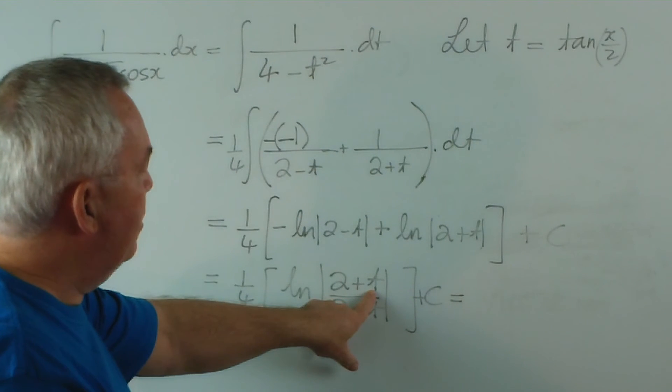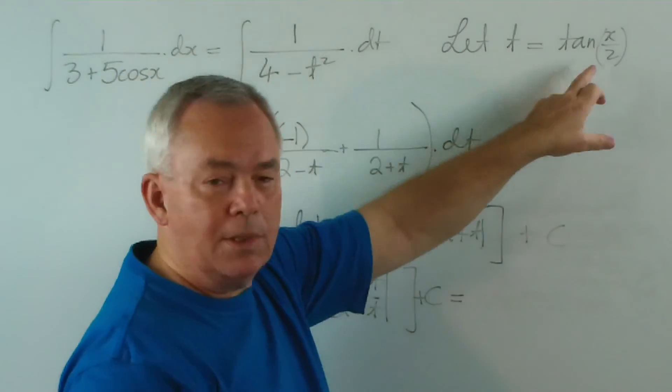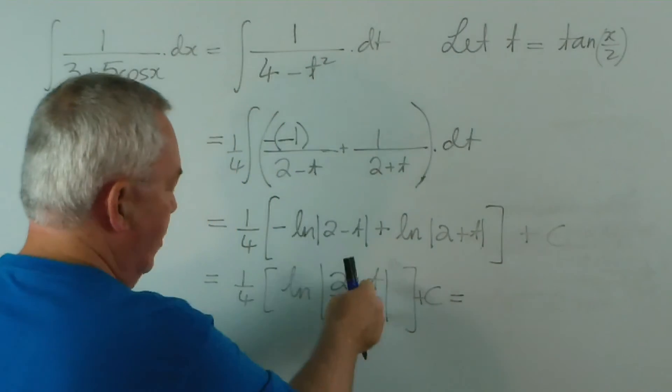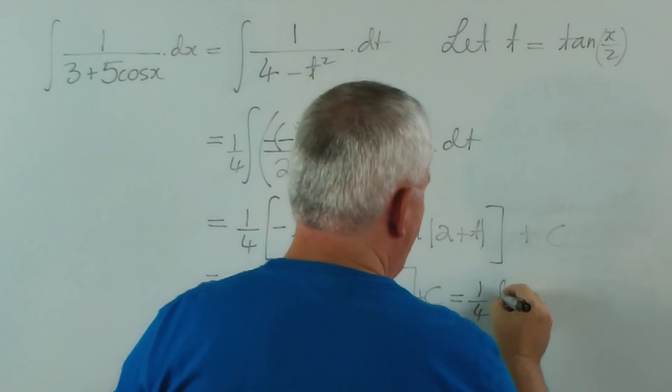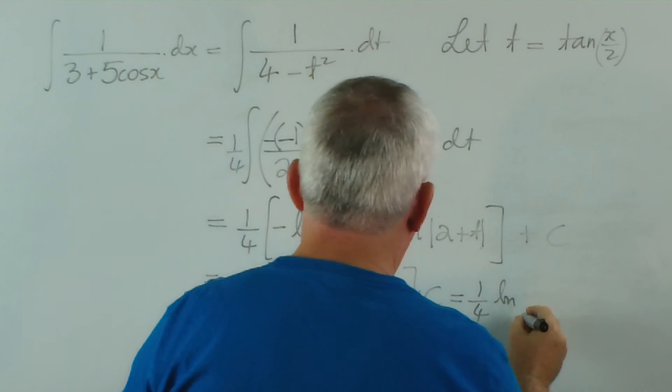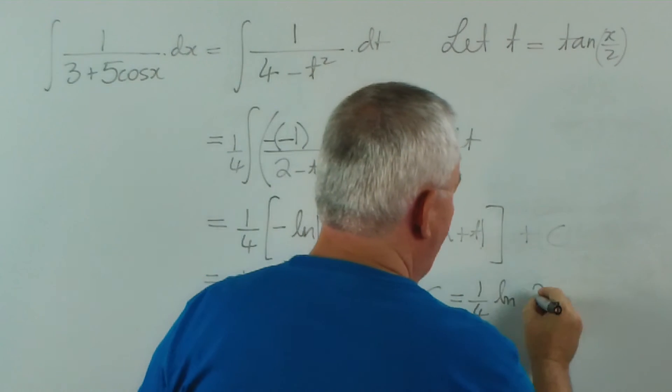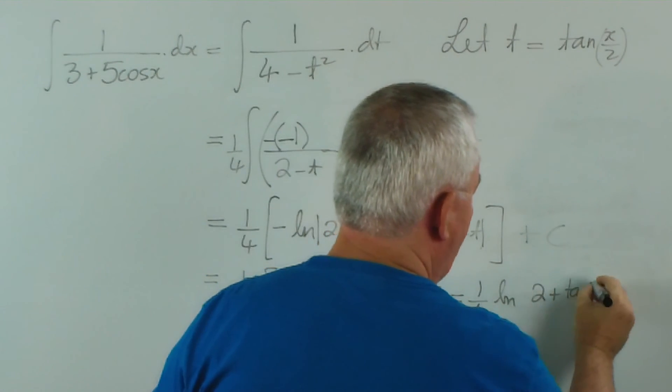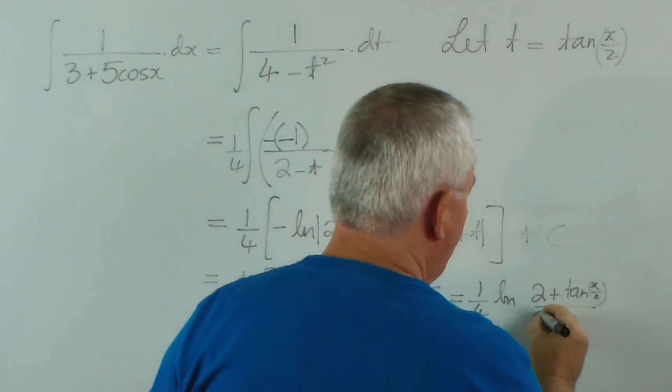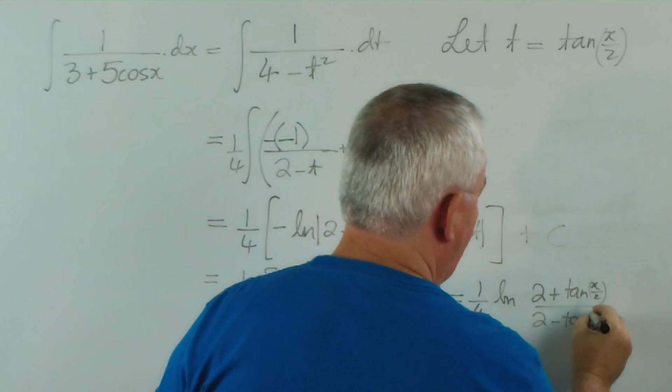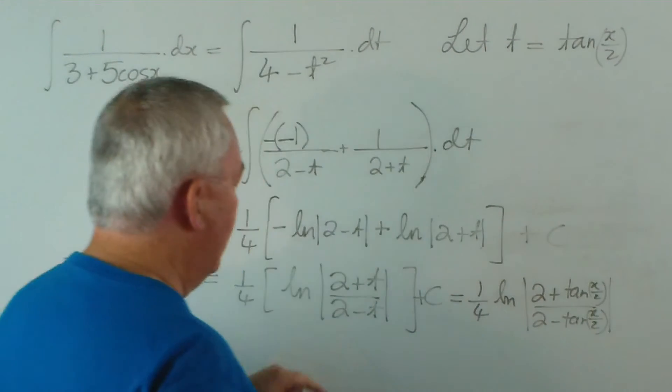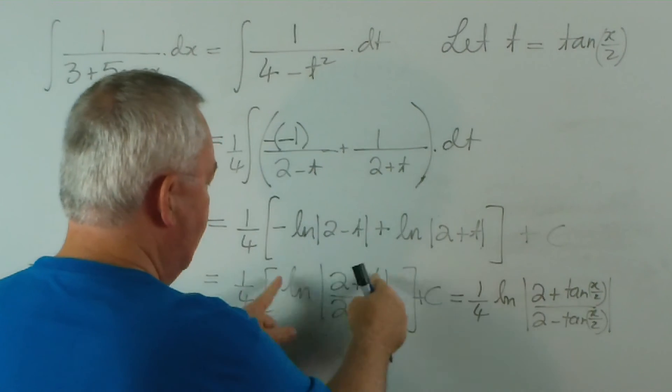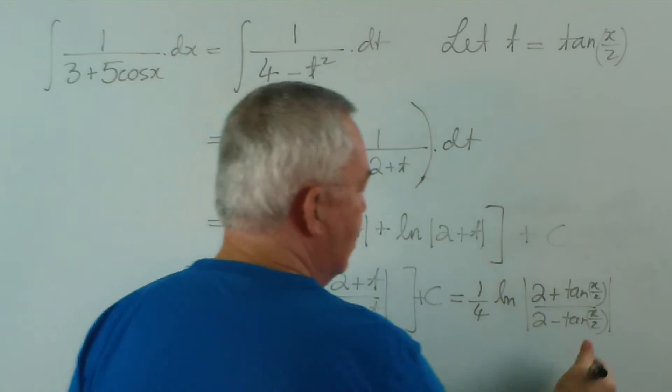We now have to substitute back. T equals tan x on 2. So we substitute that in here and we get 1 quarter times the logarithm of 2 plus tan x on 2 over 2 minus tan x on 2, absolute value. Since that's one expression now, I'm dispensing with the brackets, plus c.